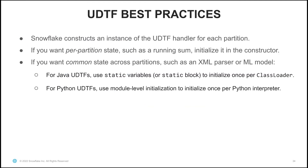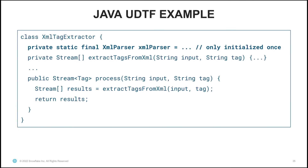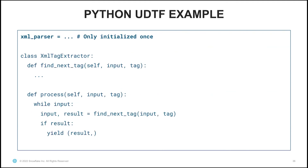Something to keep in mind when working with Java and Python UDTFs is that Snowflake constructs an instance of the handler for each partition that it sees. If you want per-partition state such as a running sum, you can initialize that in the constructor. If you want to have common state — such as an XML parser or ML model — you should use static variables for Java UDTFs, or a static block and do initialization once per class loader. For Python UDTFs, you should use module-level initialization to initialize once per Python interpreter process. In the Java example, I've defined a private static final variable called XML_PARSER, initialized only once per class loader. In the Python UDTF, we put the XML parser at module-level scope so it's initialized only once even though the handler class is constructed for every partition.